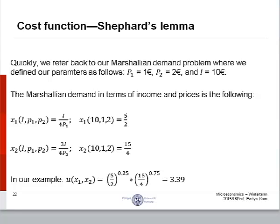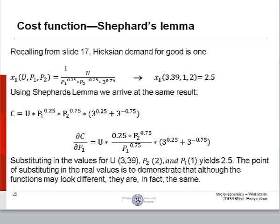The Marshallian demand in terms of income and prices is as follows. I mean, because if you're seeing this video and you didn't look at the Marshallian demand video, or maybe you forgot what was on the first video, this is just sort of a recap of what we did back there. We're getting a number for utility. The number is 3.39. Recalling from slide 17, Hicksian demand for good one is x1 is equal to this, right? So, Hicksian demand for good one is equal to 2.5. If you substitute in our 3.39 for utility, one for price one and two for price two, it gives us 2.5.